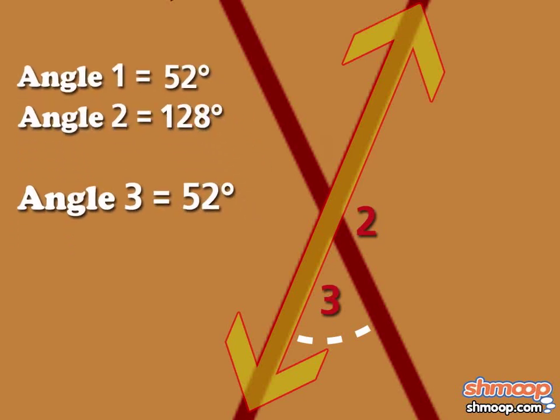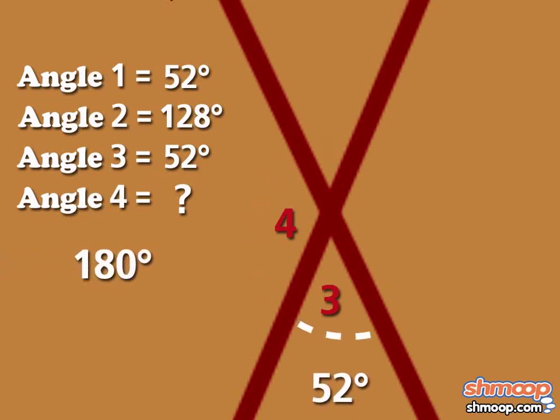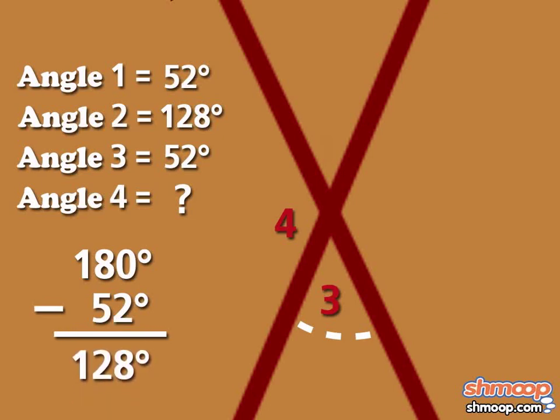Let's find the measure of the last angle. If we go through the same process and pick out a supplementary linear pair, we'll calculate 180 degrees minus 52 degrees equals 128 degrees.